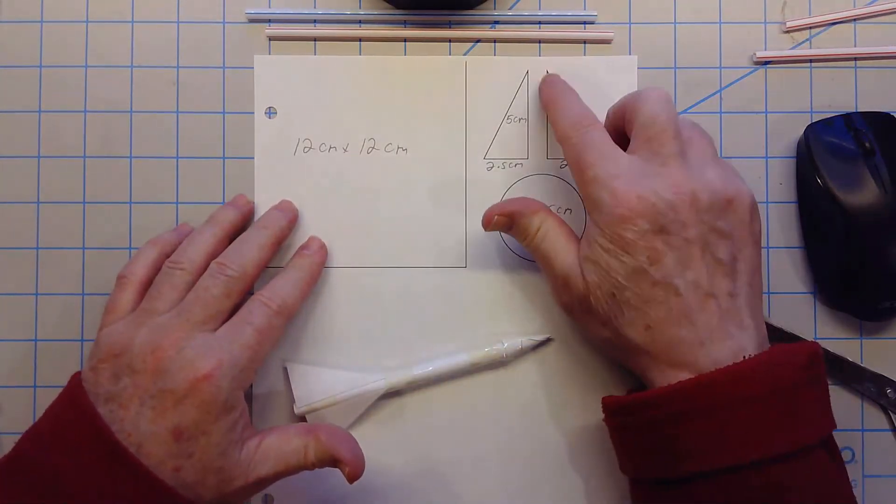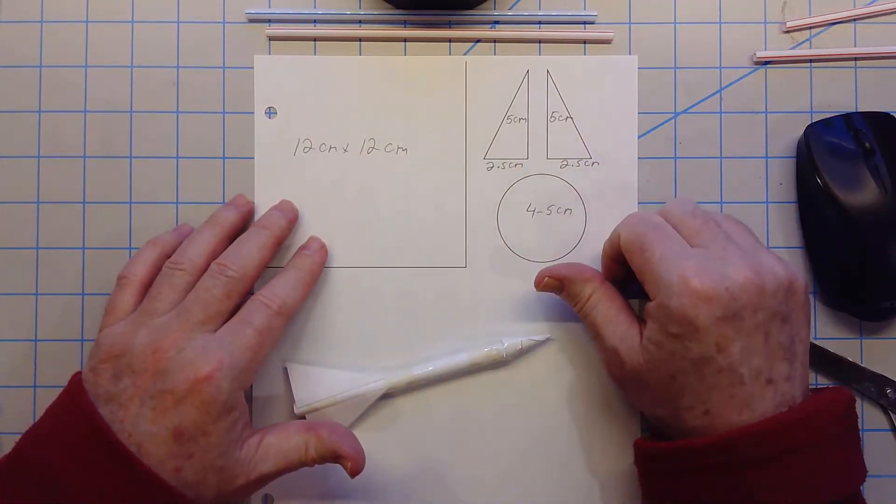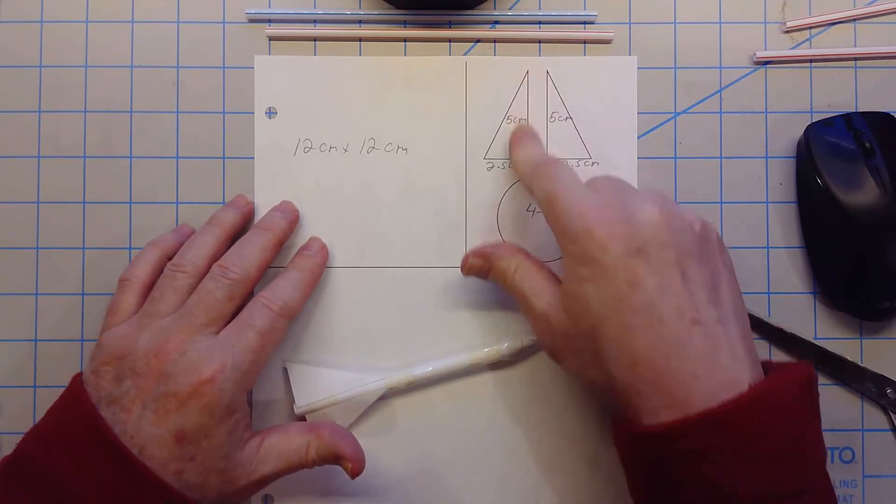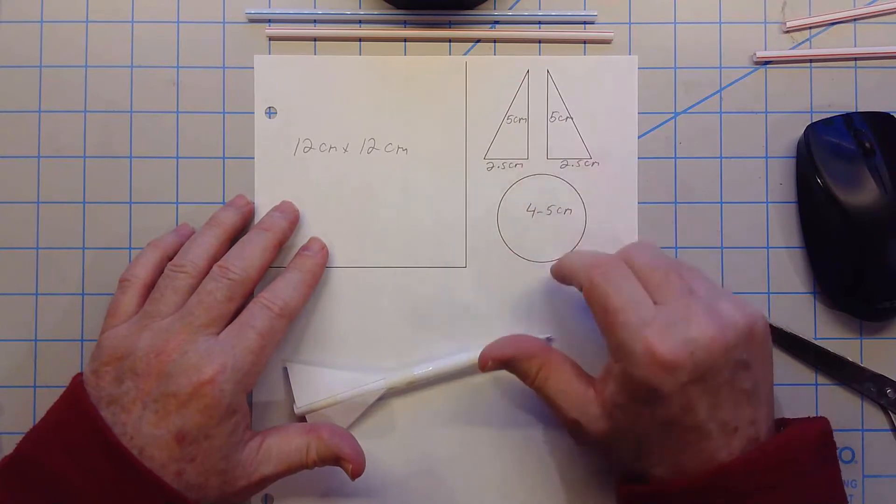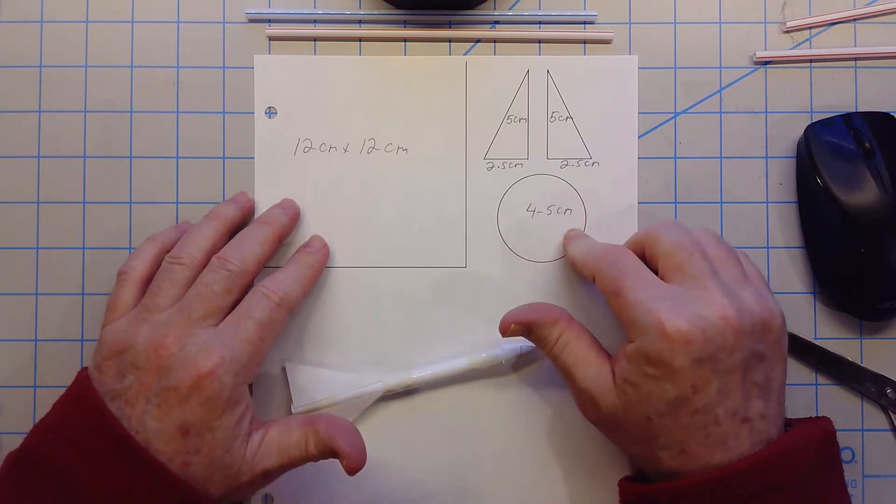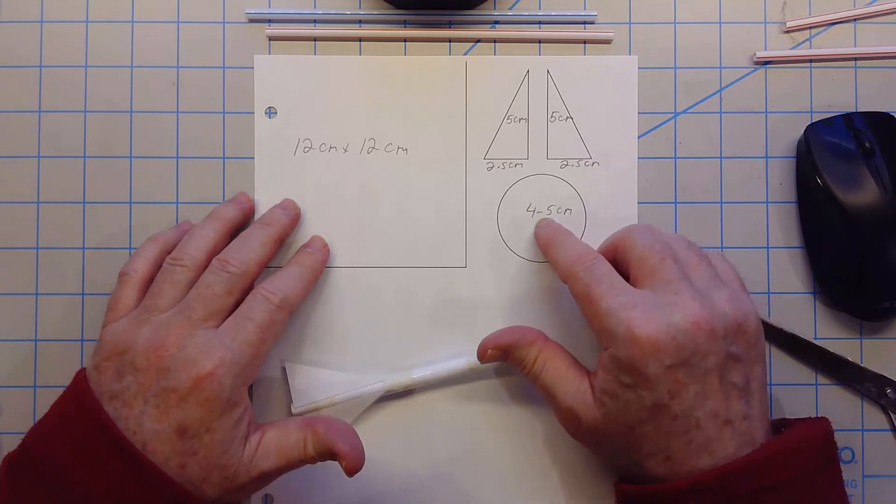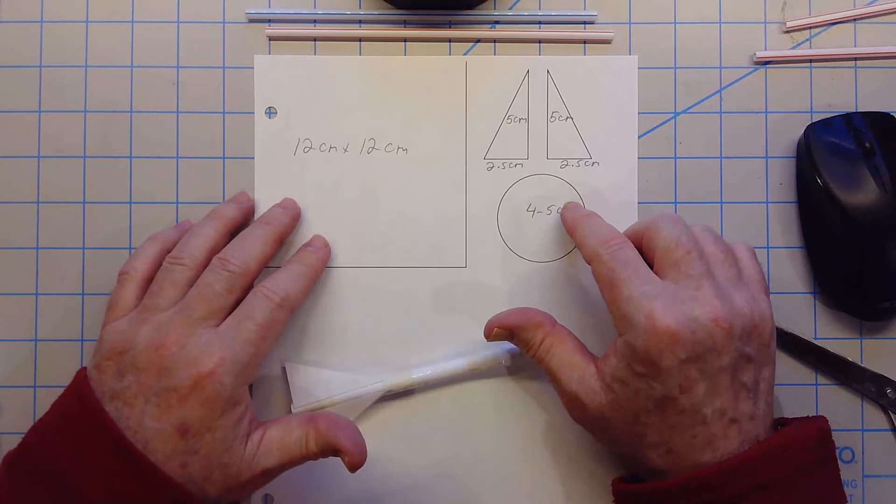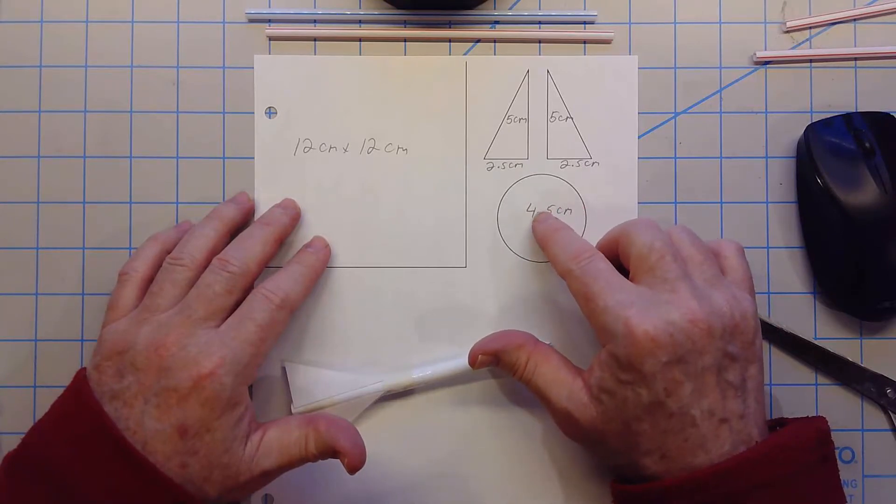What I'm doing here is I'm using a 12 centimeter by 12 centimeter square. I drew that and I drew a couple of right triangles, two and a half centimeters at the bottom and five centimeters for the height. I need two of those and I have a circle that's about four to five centimeters across, the diameter.